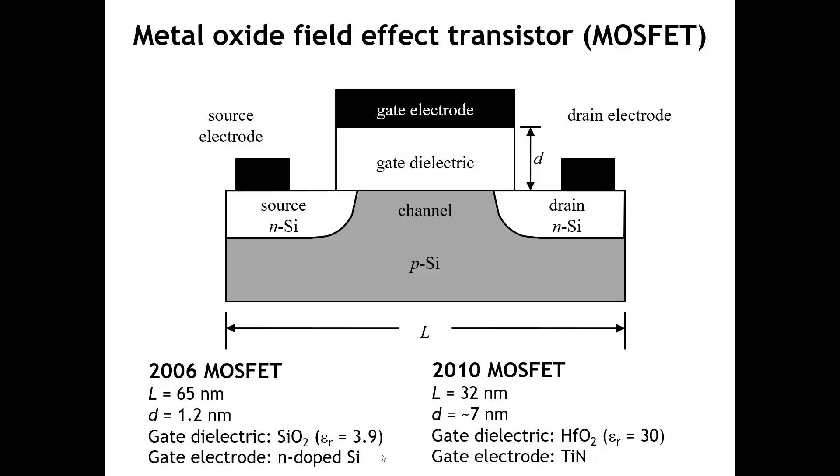And so by going to amorphous hafnium oxide, which has a dielectric constant of about 30, now suddenly make the gate dielectric much thicker and still get the same capacitance from your gate dielectric. So that was a really big change that was made in the materials that are used in semiconductor transistors. And in my opinion, it made the world of transistors just a little bit more interesting from a materials perspective.